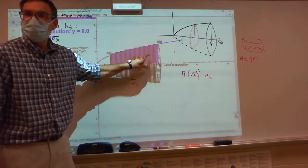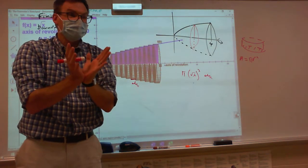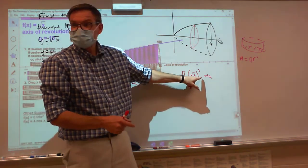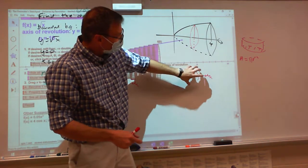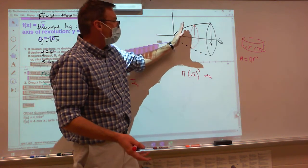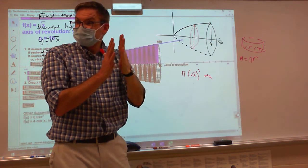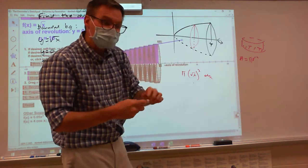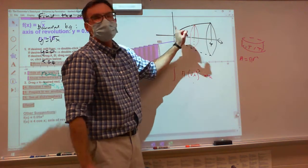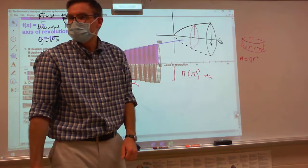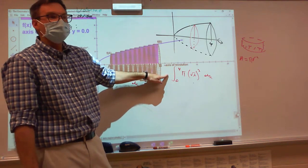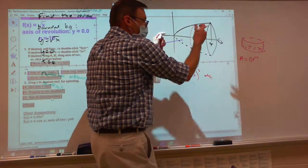If I add up all of those disks, that's going to give me my whole volume. This disk is generated from this rectangle. So if I can add up all of the rectangles from here to here, that's going to add up all the disks. We take the integral — where did my rectangle go from? Zero to four. If I compute this value, that will tell me the volume of this object.